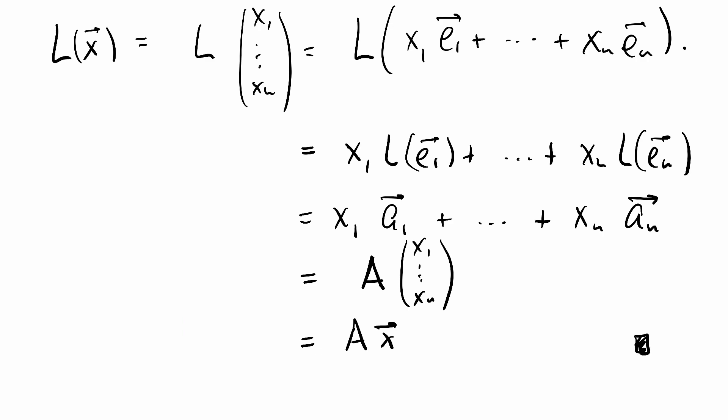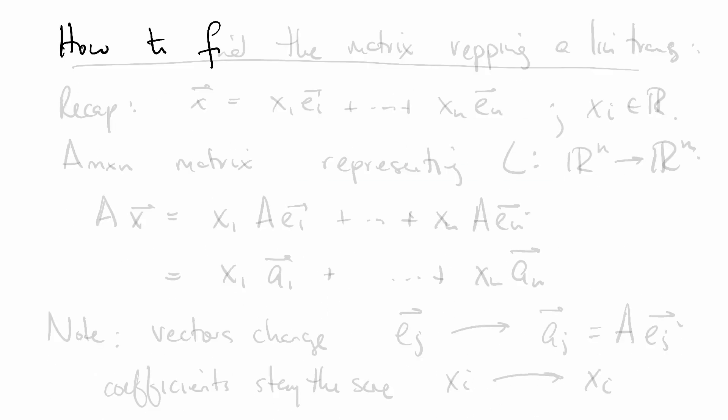End of proof. So ends the theory. The theory tells us exactly what A should look like. Let's recap. How to find the matrix representing a linear transformation.